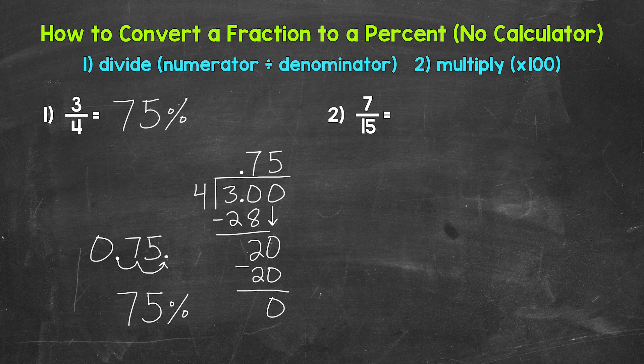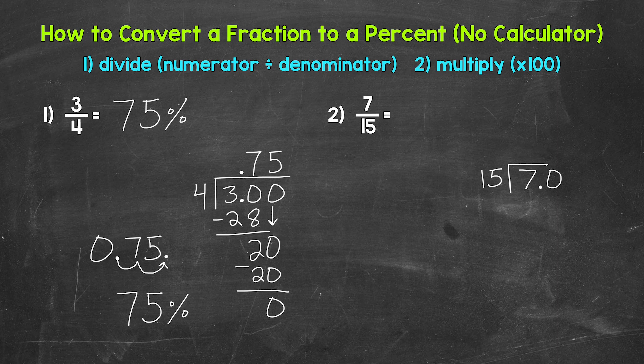Let's move on to number two where we have 7 fifteenths. So we need to do 7 divided by 15 — the numerator divided by the denominator. Now 7 divided by 15: how many whole groups of 15 in 7? How many fifteens in 7? Well, we can't do that. So let's use a decimal and a zero in order to work through this problem.